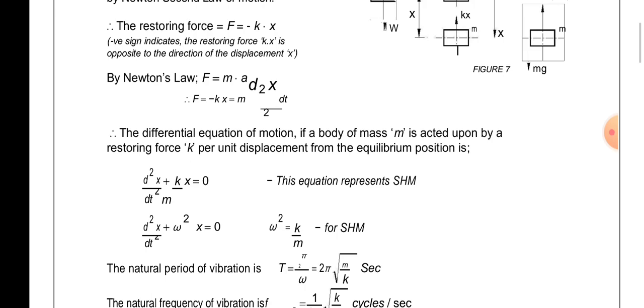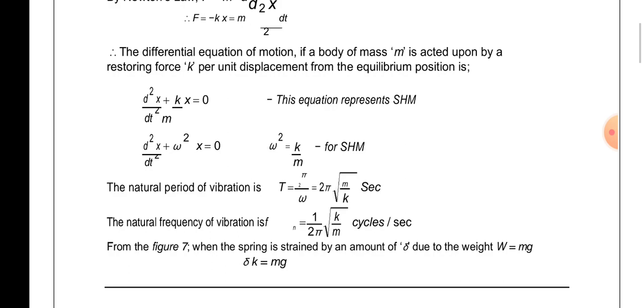For SHM, d²x/dt² + ω²x = 0, so ω = √(k/m). The natural time period of vibration is T = 2π/ω = 2π√(m/k). The natural frequency of vibration is fn = 1/(2π) · √(k/m) cycles per second.